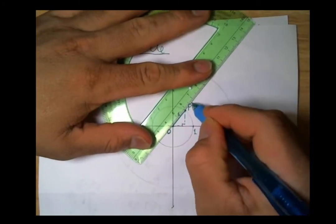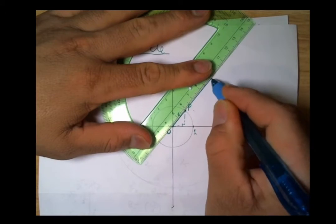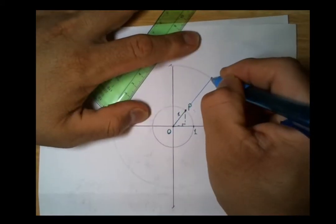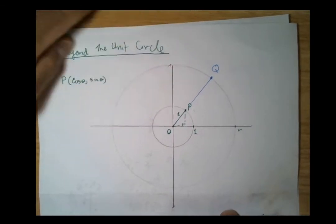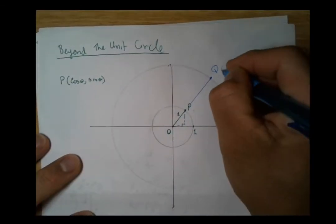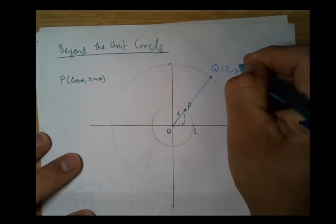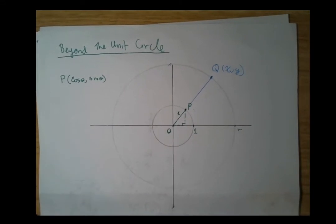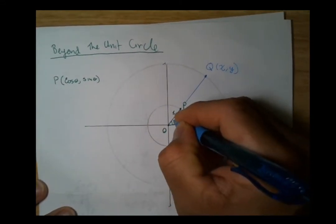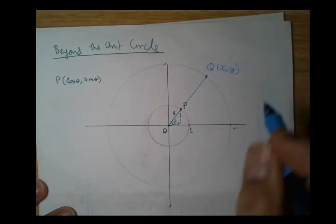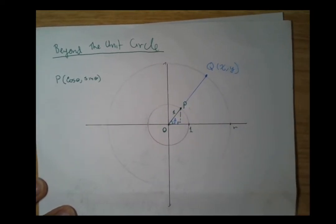Now, what if that point didn't lie on this unit circle but instead lay on some other circle? I'll call this point Q with coordinates (x, y). Can I write these in terms of sine theta and cosine theta, or some angle?